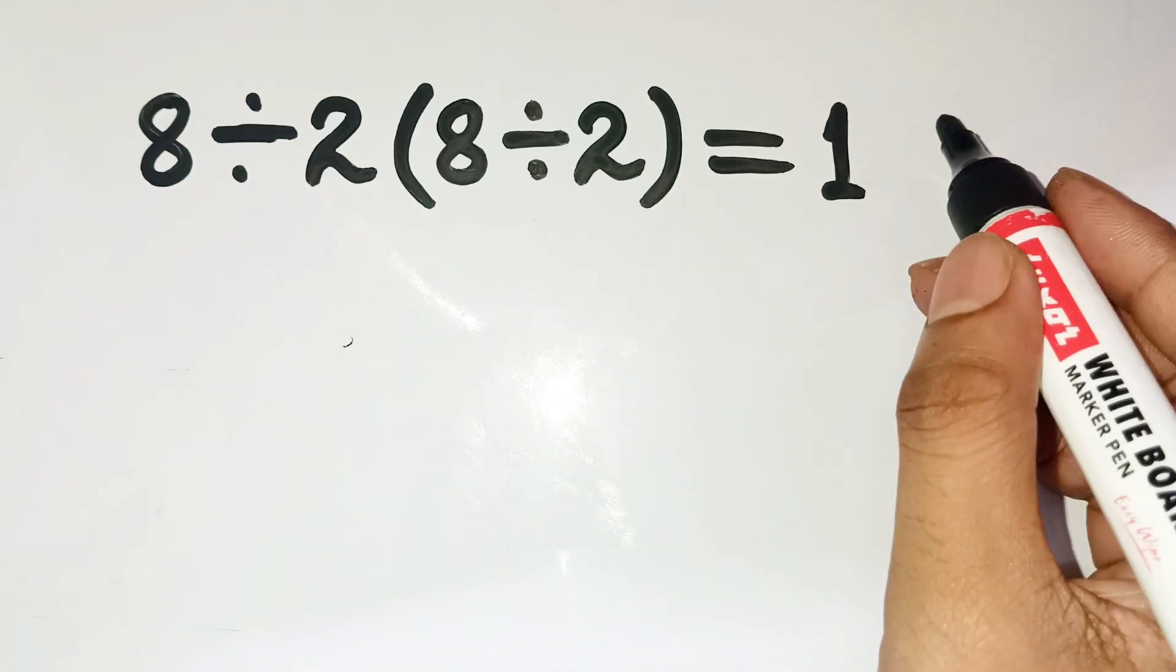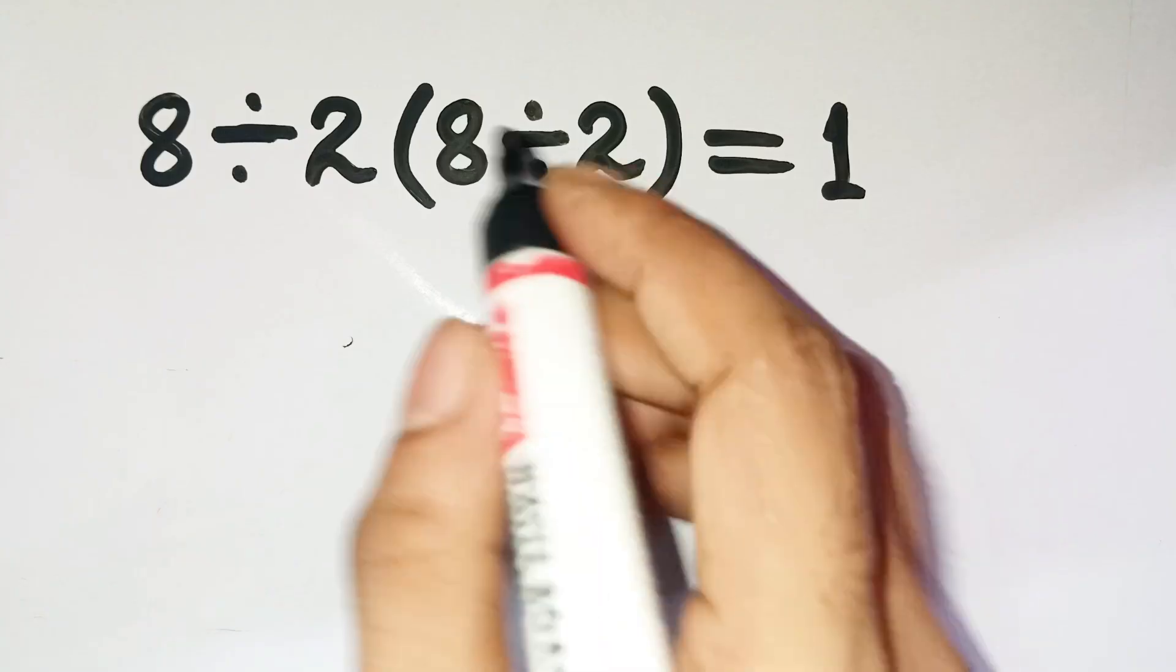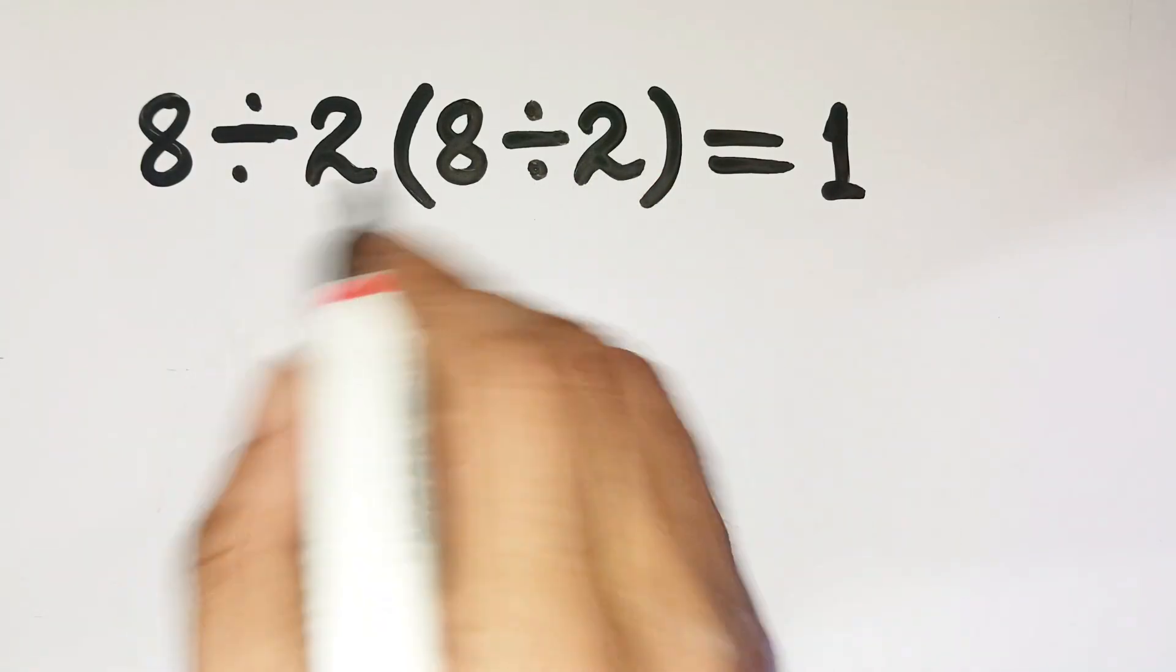Almost everyone jumps straight to 1, but that's a huge mistake. At first glance, 8 divided by 2 times parentheses 8 divided by 2 seems pretty harmless, right?